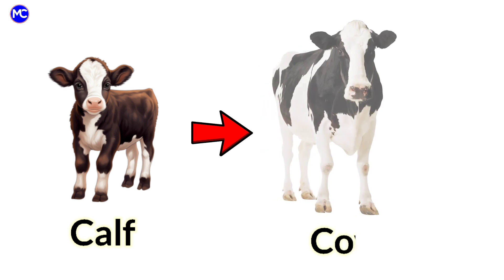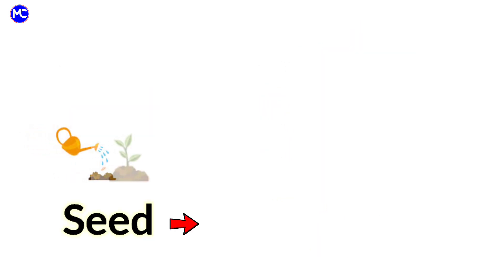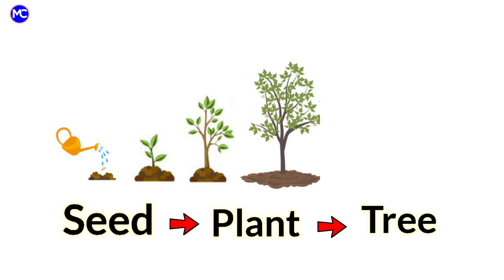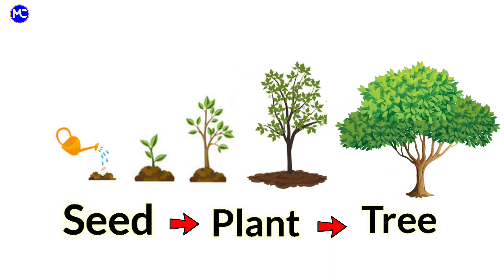Calves grow into a cow. Seeds grow into a plant, and then plants grow into a huge tree.